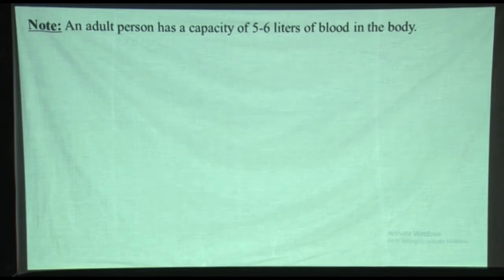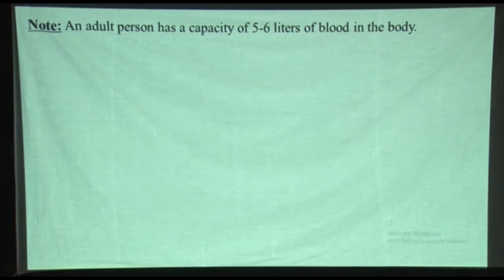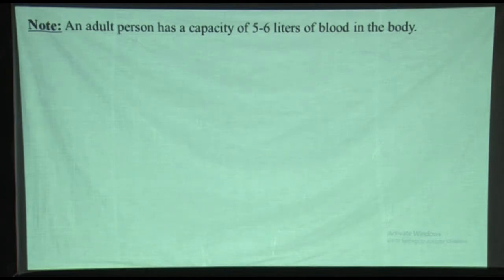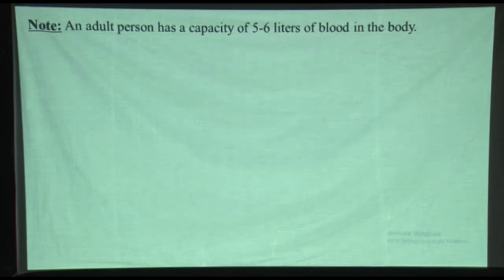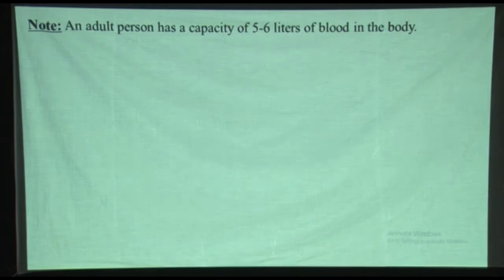Remember, on average, an adult person has in the range of five to six liters of blood. They can ask you the quantity or capacity of blood in liters — it is five to six liters in a human adult body. Anything below this can be a lack of blood, simply referred to as anemia — lack of iron in the body. So the average quantity specifically for an adult person should be five to six liters of blood.